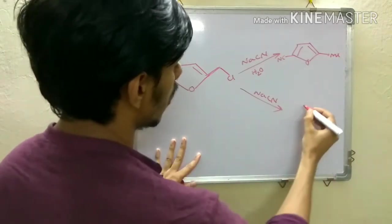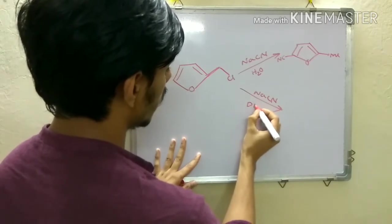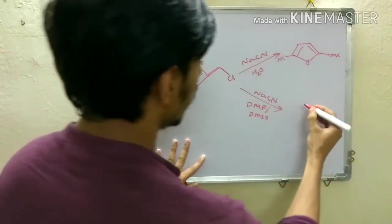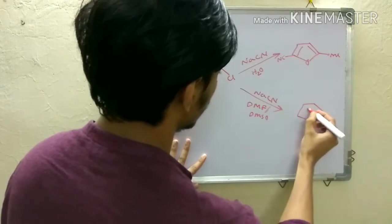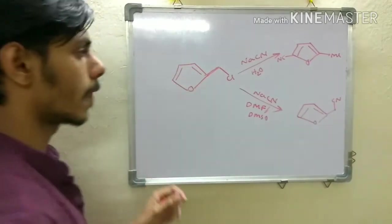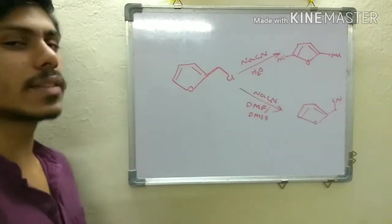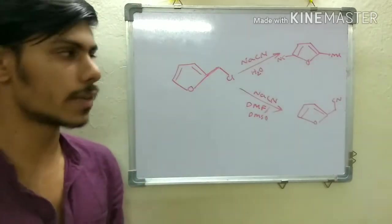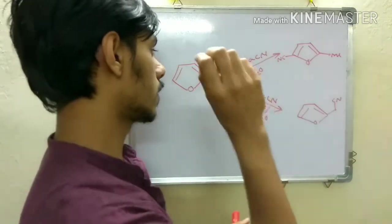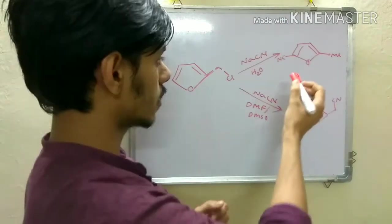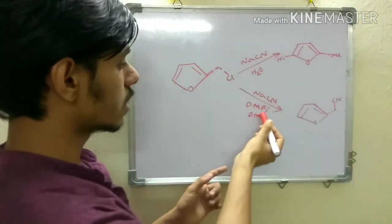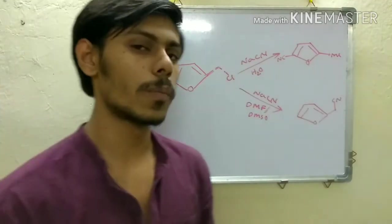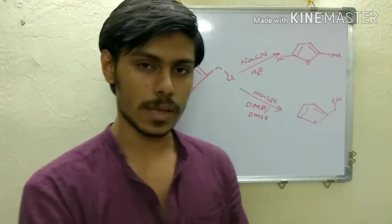Here the product has a methyl group. When you use DMF or DMSO as solvent you will get this different product. You don't change the reagent — you only change the solvent — and the outcome of the reaction is totally different. In water the reaction occurs at one particular center, and in DMF or DMSO it occurs at a different center.